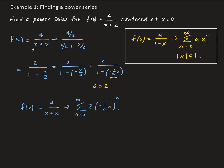So the interval of convergence for this series — remember that it has to coincide with the geometric power series. In order for this series to converge, this has to be true. So we want to find the values of x that make this series converge. This is the same as negative 1 less than negative one-half x less than 1, and then we can go ahead and multiply everything by negative 2, so that's going to give us positive 2. You have to change the signs, and that's going to give us negative 2 on the other side.